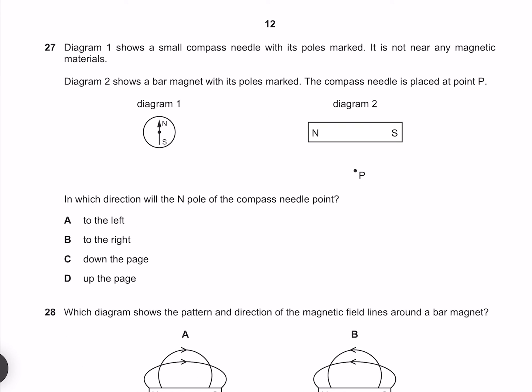Diagram 1 shows a small compass needle with its poles marked. It is not near any magnetic materials. Diagram 2 shows a bar magnet with its poles marked. The compass needle is placed at point P. In which direction will the north pole of the compass needle point? If we have our compass here, then the north tip of our needle is going to be attracted towards the south pole. The north pole is therefore going to point to the right.